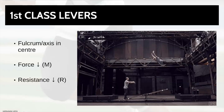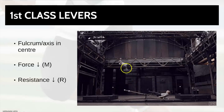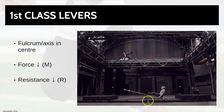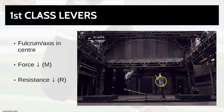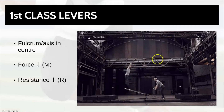Another more visual example could be a seesaw. When this guy comes down, that is the force or the effort. We're pivoting around our axis or fulcrum here, and the weight of the other guy is the resistance. So when the force comes down, the load goes up.